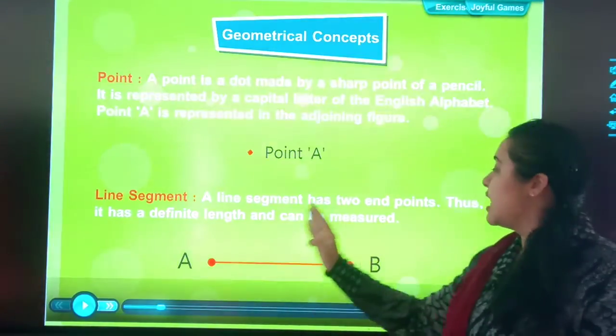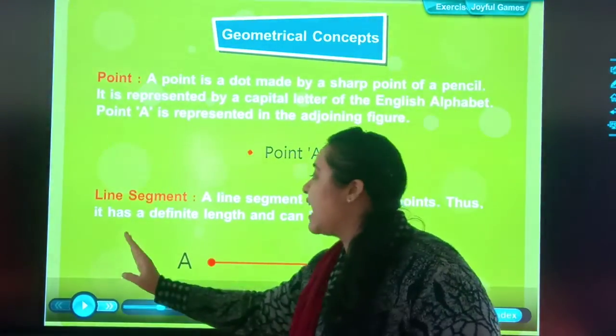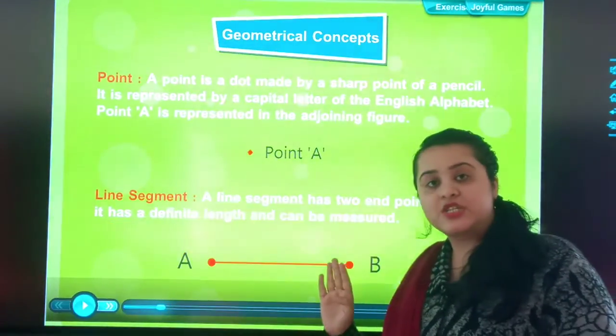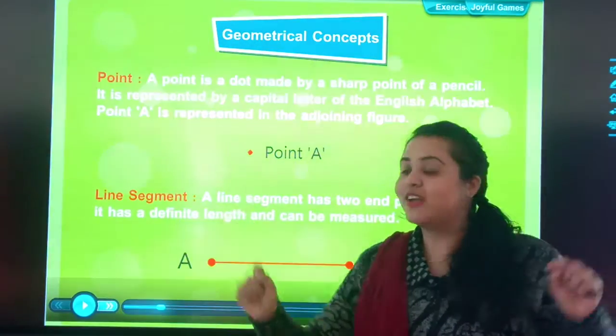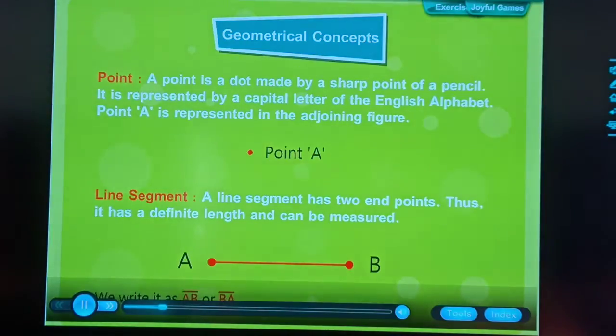Okay students? A line segment has two end points. Thus, it has a definite length and can be measured. We can measure the distance between the two end points and can be measured. We write it as A, B, or B, A.